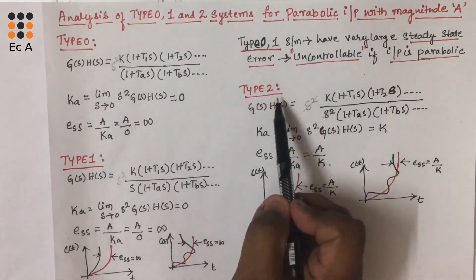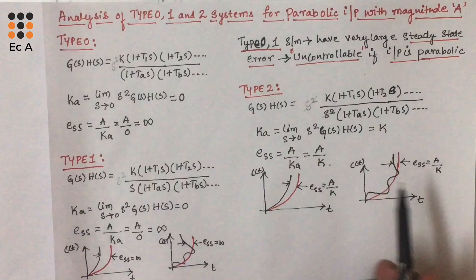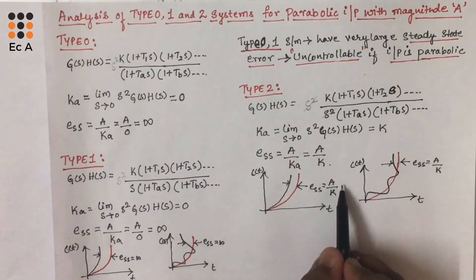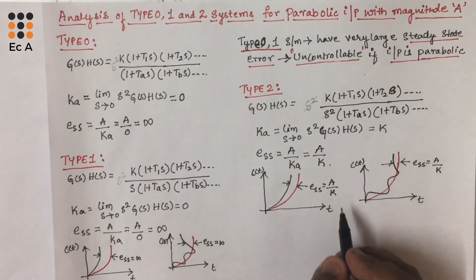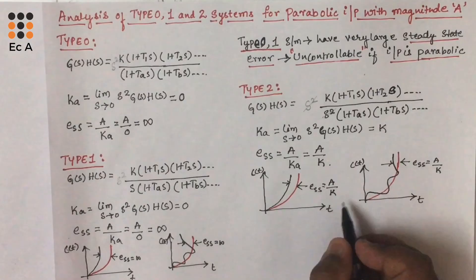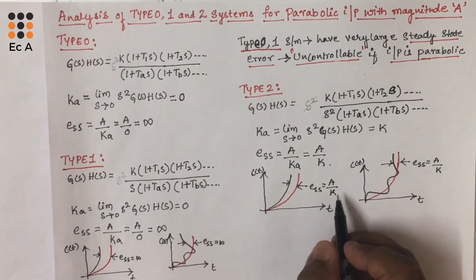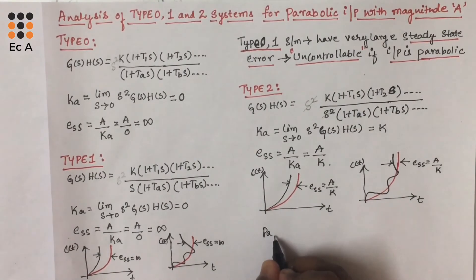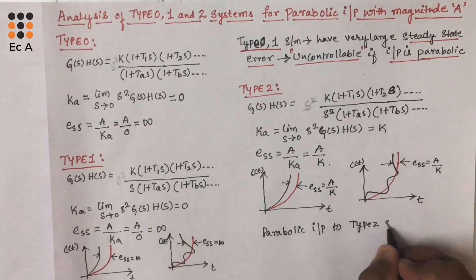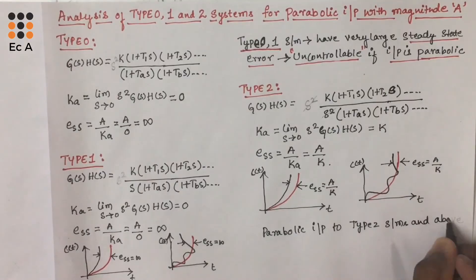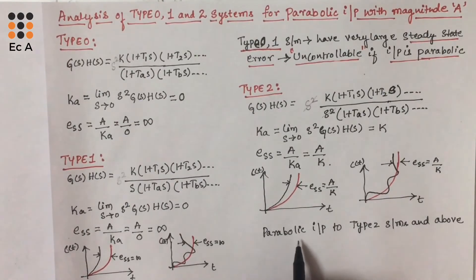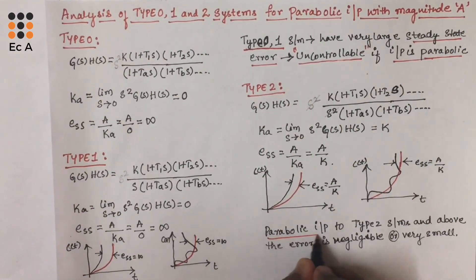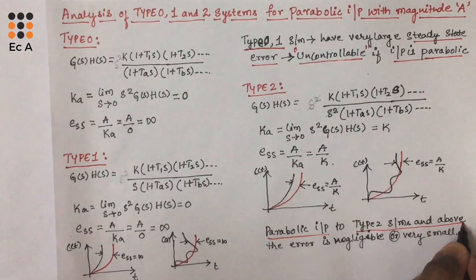These two are the responses of the type 2 system when parabolic input is applied. If you observe, we have a steady-state error of A/K, which is a finite value. Hence, we can control the steady-state error by varying the value of K or varying the value of A. Therefore, parabolic input can be applied to type 2 systems and above, where the error will be negligible or very small.